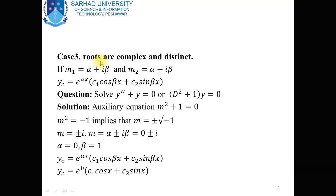Case number 3: when the roots of the auxiliary equation are complex and distinct — meaning the roots are imaginary, complex and different. For example, m1 = α + iβ and m2 = α - iβ. Then the complementary function will be e^(αx)·(c1·cos(βx) + c2·sin(βx)).